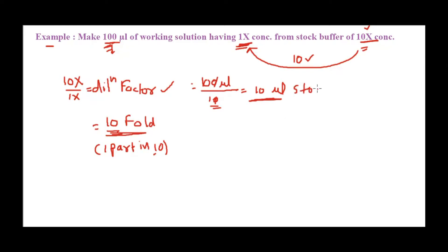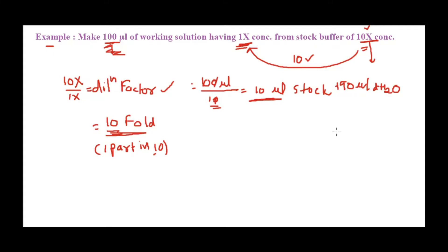So when you take 10 microliters of your 10x concentrated buffer and make it up to 100 microliters — meaning add 90 microliters of distilled water — you get 100 microliters of 1x buffer.